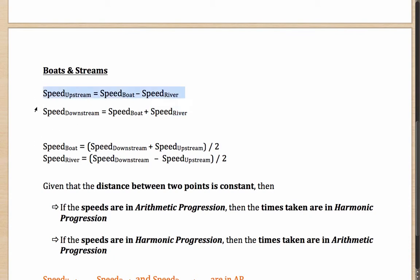Now, this was the method or these were the formulas, both of them, which could have been used if you knew the speed of the boat and the speed of the river to calculate the upstream and the downstream speeds.